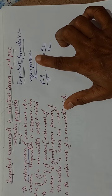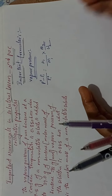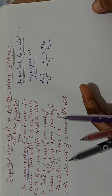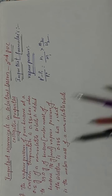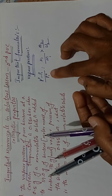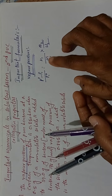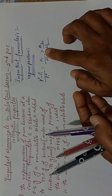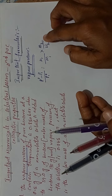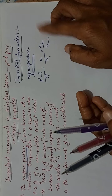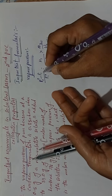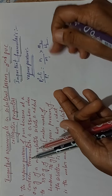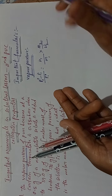If vapor pressure is mentioned in the problem, immediately use this formula: (p1⁰ − p1) / p1⁰ = (w1 / m1) × (m2 / w2). Here p1⁰ is the vapor pressure of the pure solvent, and p1 is the vapor pressure of the solution.